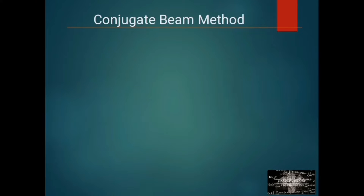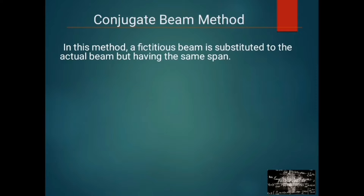Welcome again to our tutorial on the Conjugate Beam Method. In this method, a fictitious beam is substituted for the actual beam but having the same span.